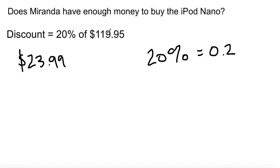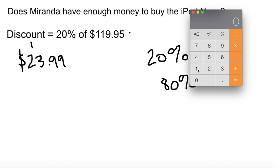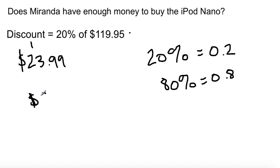Multiplying $119.95 times 20% gives you just the discount. Another way to find the total discounted price is to multiply by 80%, since 20% off gives you 80% of the original, represented as 0.8. Using the calculator: $119.95 times 0.8 gives a sale price of $95.96.